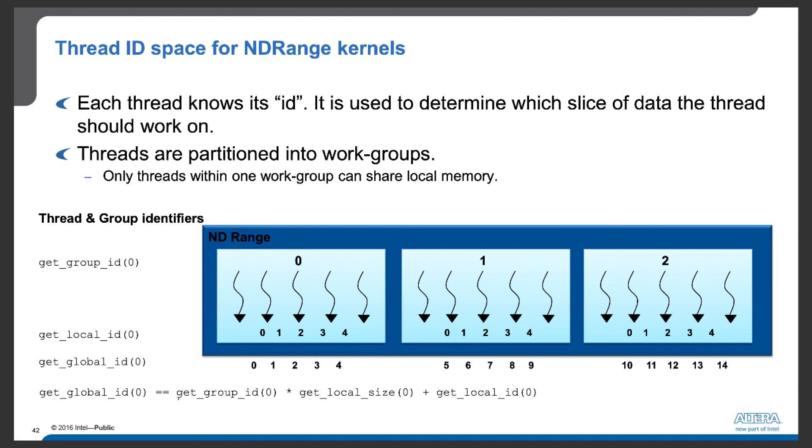We can easily observe that the global ID can be calculated using this formula: the group ID times the local size, which is the number of threads in a group, plus the local ID of that thread.